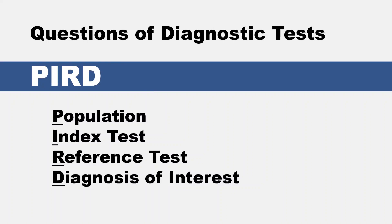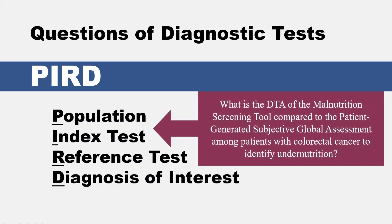The next framework is best for questions of diagnostic tests — PIRD, P-I-R-D: population, index test, reference test, and diagnosis of interest. A sample topic might look like this: 'What is the diagnostic test accuracy of the malnutrition screening tool compared to the patient-generated subjective global assessment among patients with colorectal cancer to identify undernutrition?'